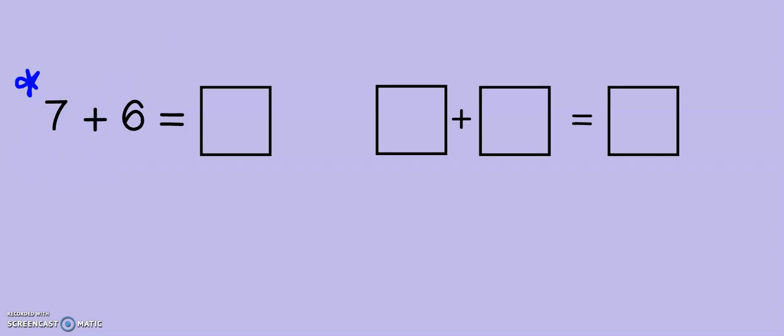So, let's add 3 to the 7. That gets me to 10. And, if I added 3 to the 7, do you remember what I need to do to the 6? 6, take 3 away from the 6. Good. 6, 5, 4, 3.